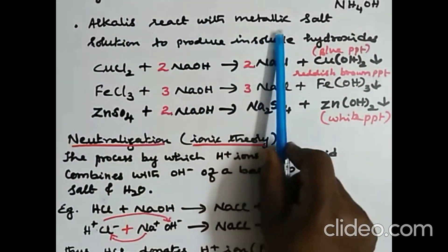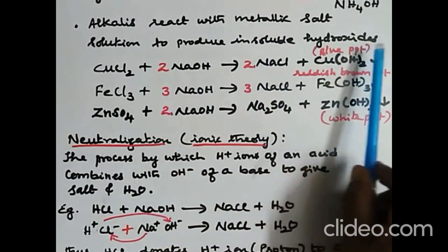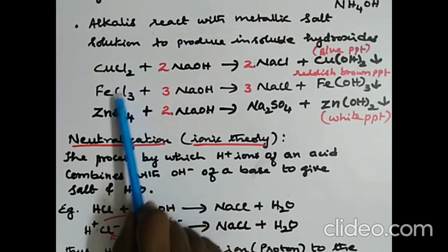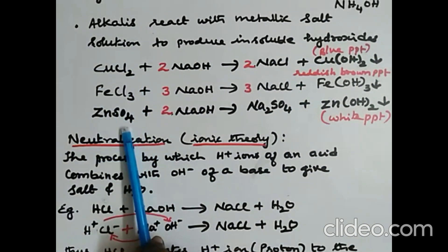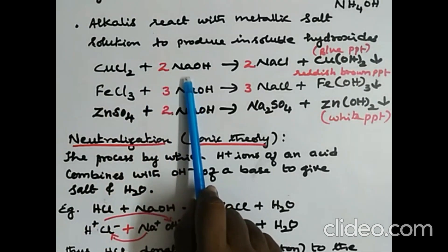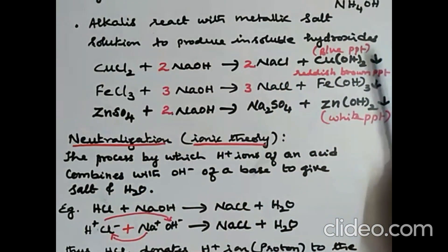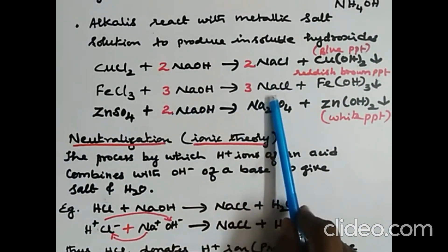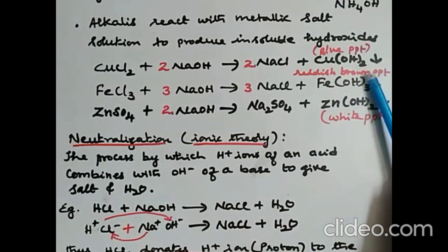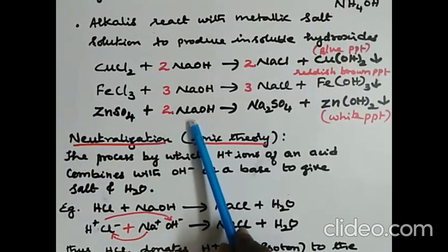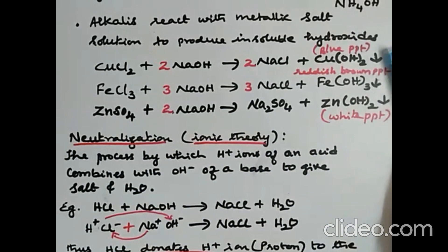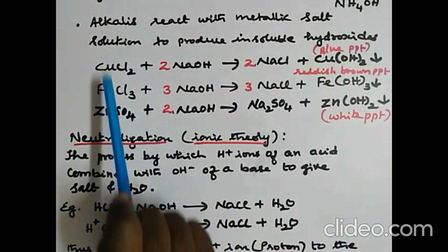Alkalis react with metal salt solutions. Copper chloride plus sodium hydroxide gives sodium chloride and copper hydroxide — a blue precipitate. Ferric chloride plus sodium hydroxide gives sodium chloride and ferric hydroxide — a reddish-brown precipitate. Zinc sulfate plus sodium hydroxide gives sodium sulfate and zinc hydroxide — a white precipitate. All these precipitates are used to identify the basic radical.